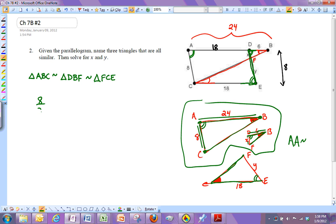So 8 over X equals 24 over 6. And you can reduce that if you want to, or you can just cross multiply right away and get 48 equals 24X. So X is going to be 2. So X up here is 2.